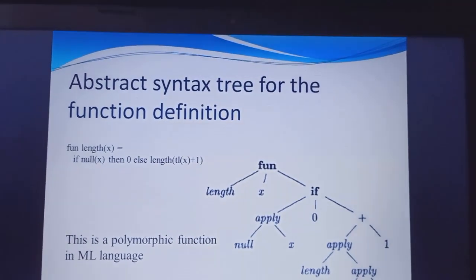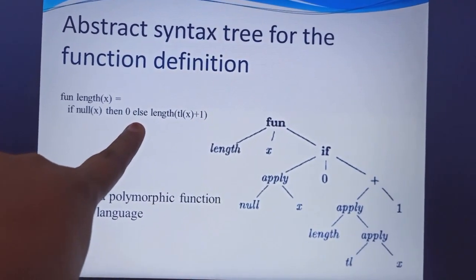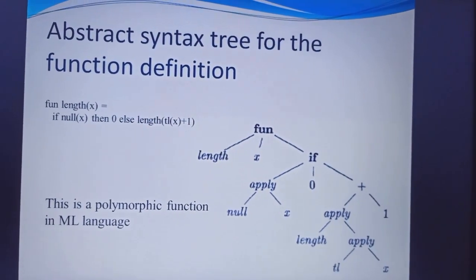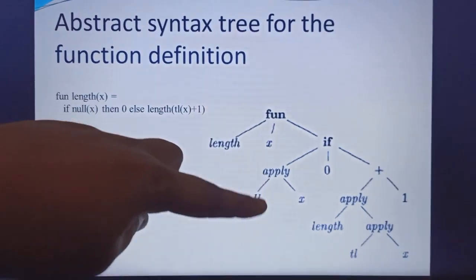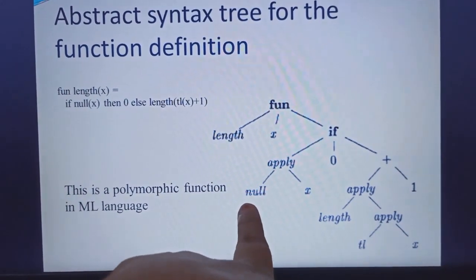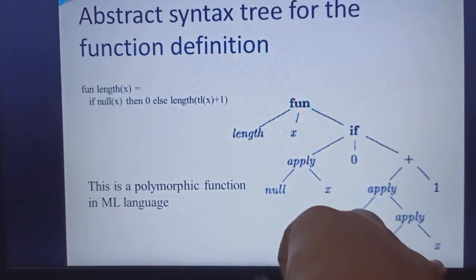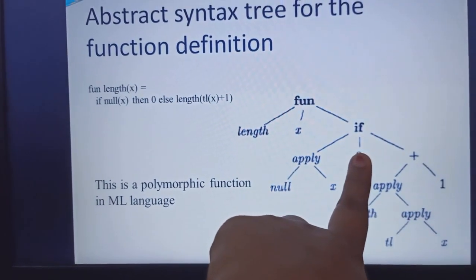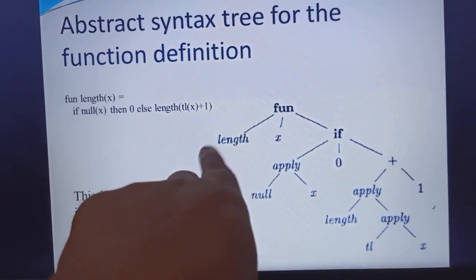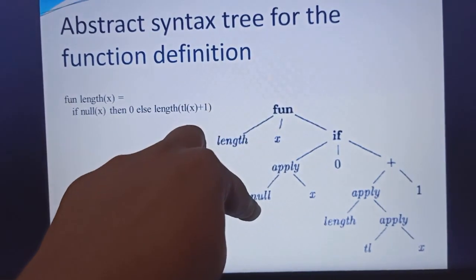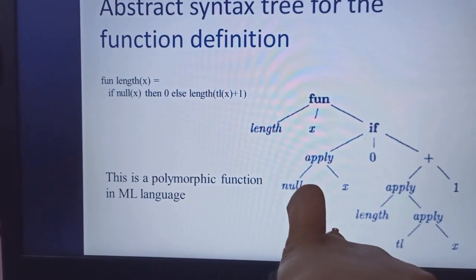Next is the abstract syntax tree for a function definition. For the function length of x: it returns null of x, that is 0, else it returns length plus 1 — meaning height null of the tree plus 1. In this tree, the function length of x is: if the condition is true then it returns 0, applying null of x returning 0. In the else case, we do length of t1 of x plus 1.